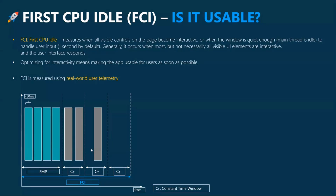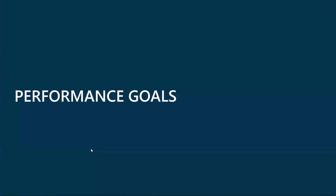The First CPU Idle metric measures interactivity of our web pages. In essence, First CPU Idle is measured when the main thread of the browser becomes idle — meaning there are no long tasks that the browser is busy with, so the browser thread is now available to reliably respond to user input. This metric is very deterministic and allows us to understand when the user can actually use our web applications. These are the two primary metrics we focus on, though we have a host of supplementary metrics we track as well.